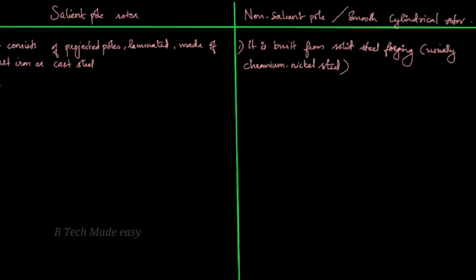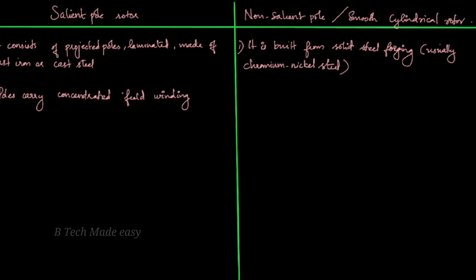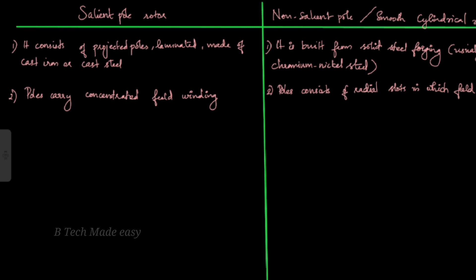Second point: in the salient pole type, the poles carry concentrated field windings. In the case of the non-salient pole type, the field windings are placed in radial slots distributed around the rotor.